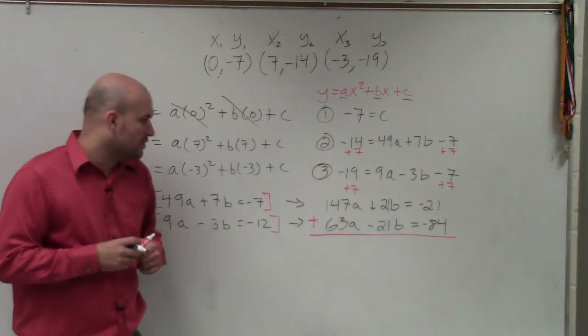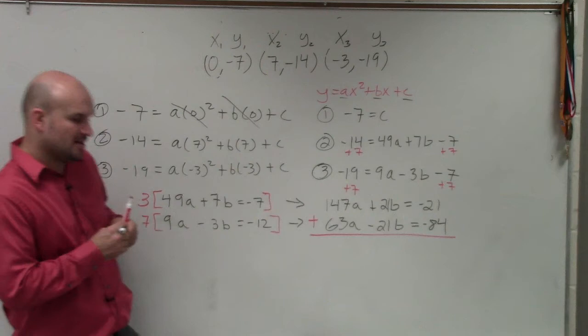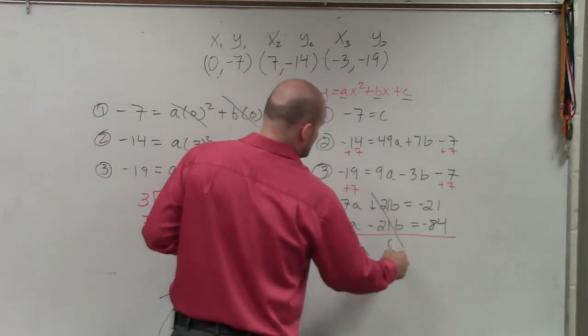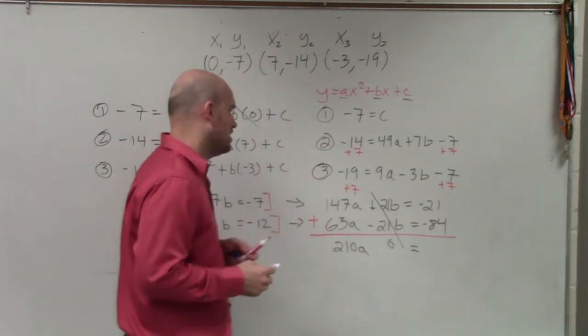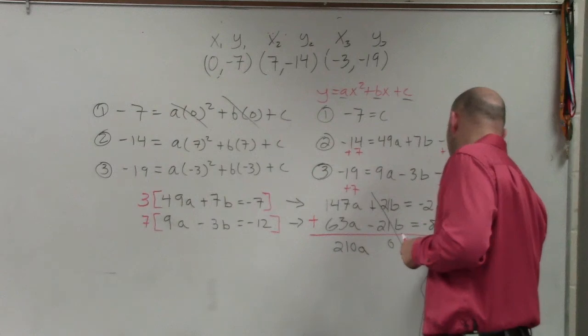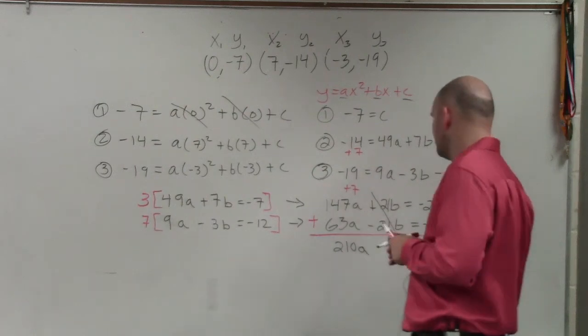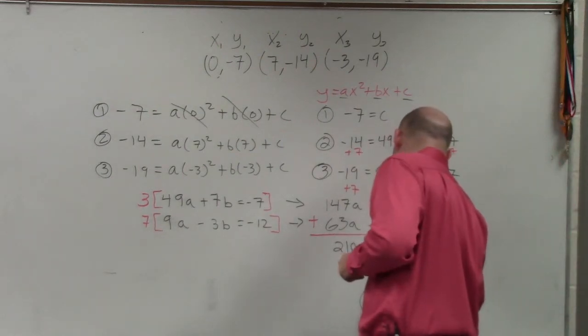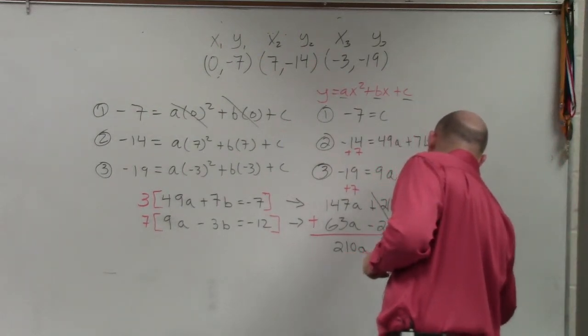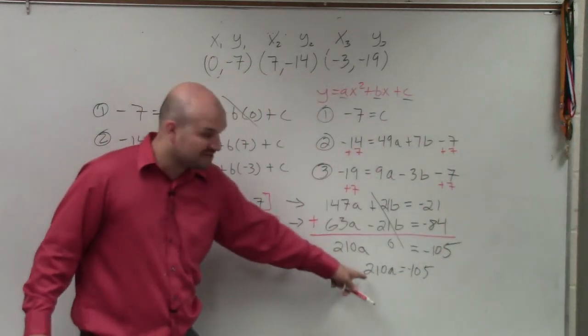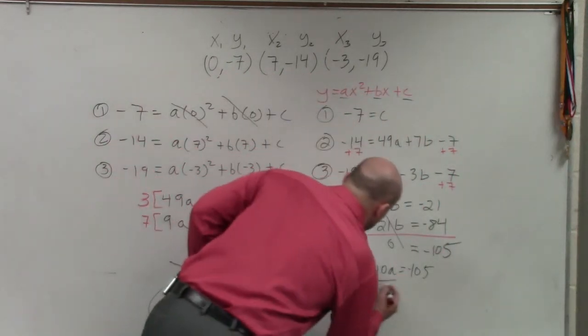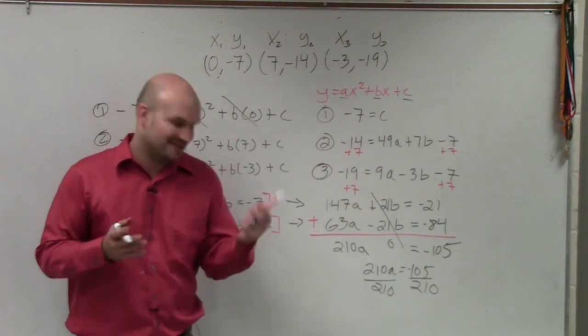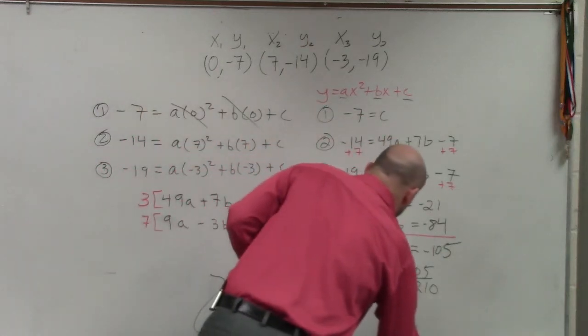So that becomes 50, so that becomes 210. Those go to 0 equals 105, negative 105. Then I have the equation 210a equals negative 105. To solve for a, I have to divide by 210 equals 1 half. And negative 1 half. Very good.